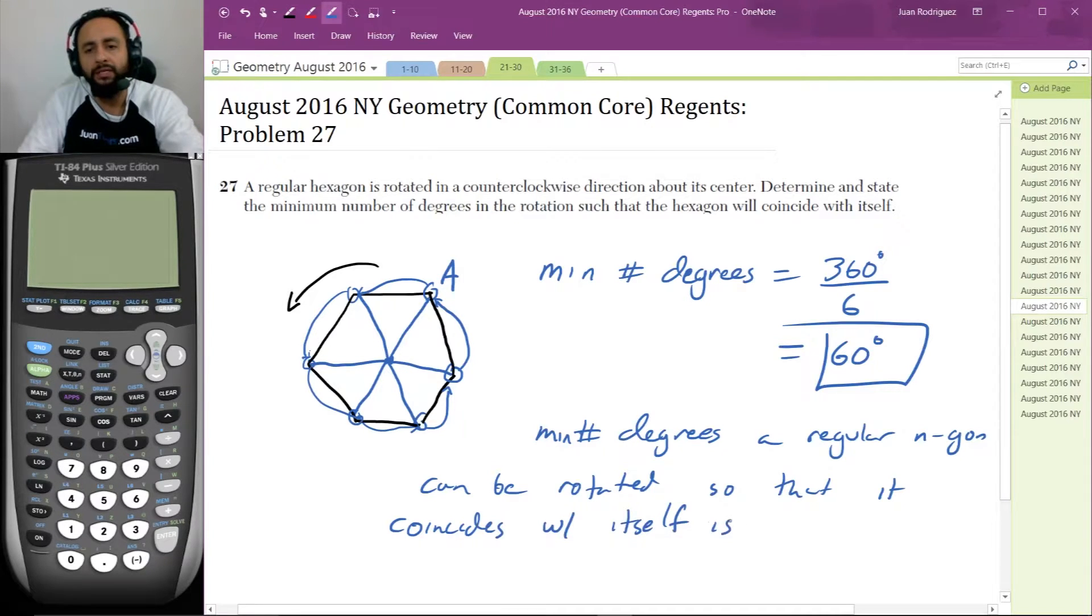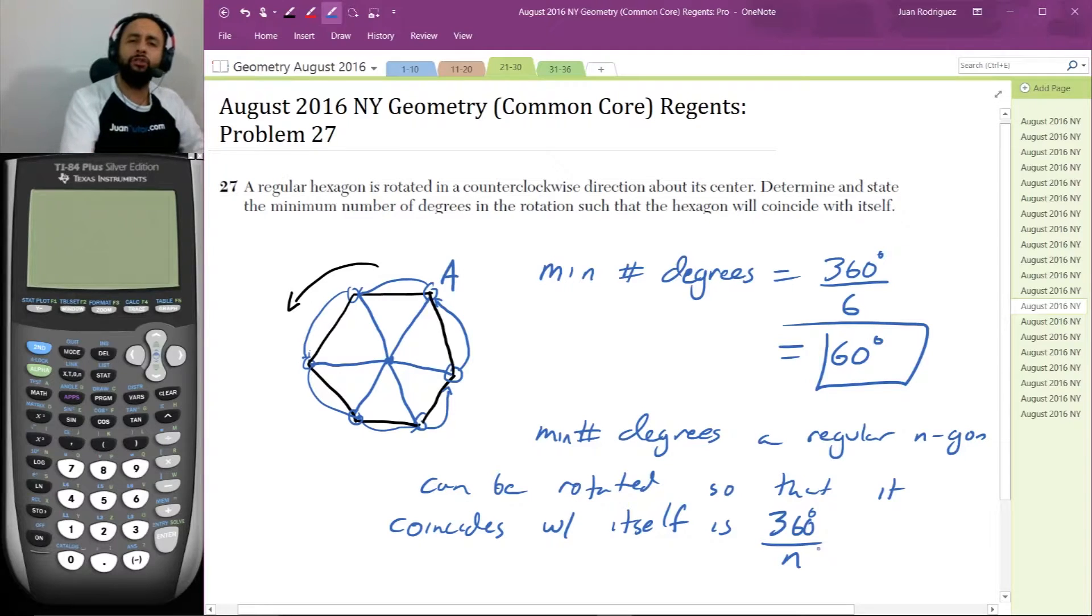Well, by the same argument that we made here, we can separate the regular N-gon into N congruent pieces. So we can actually rotate the regular N-gon N times to get each vertex back to its original location. So each rotation has to be then 360 degrees divided by N. And that's a theorem that you can remember. They do expect you to know that theorem.